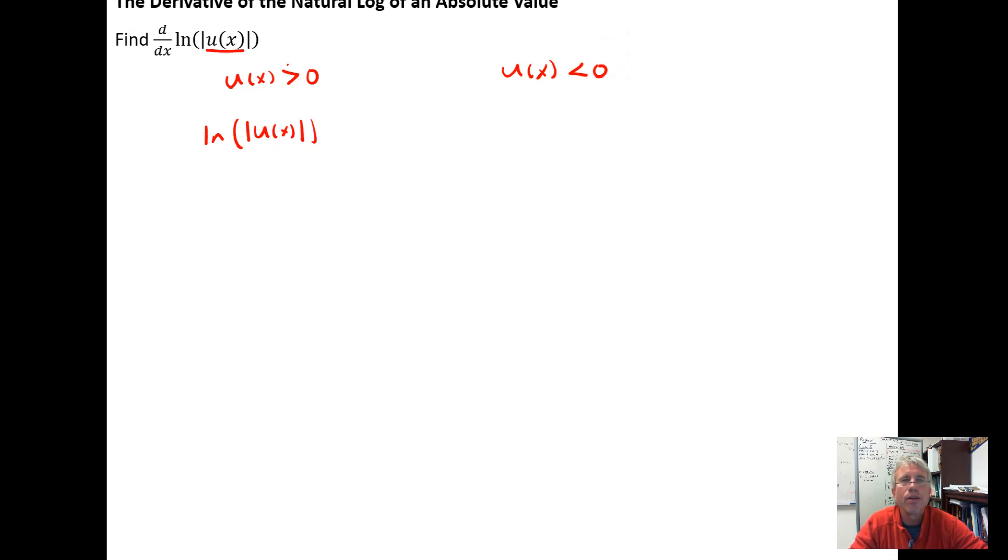we would actually not need the absolute value symbol. We would be able to just drop the absolute value symbol off. And then if you wanted to take the derivative, d/dx of the natural log of u(x), we would just do what we've been doing in previous videos. We would do 1 over the function times the derivative of the function.